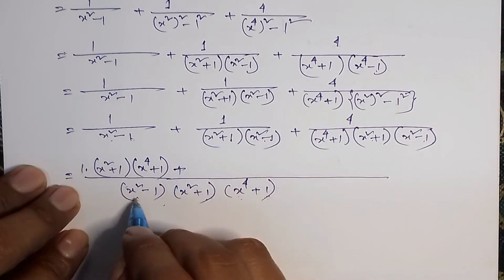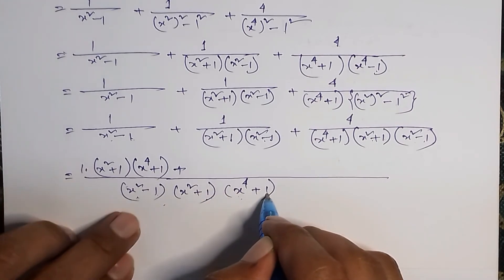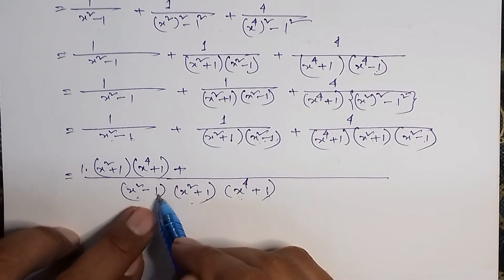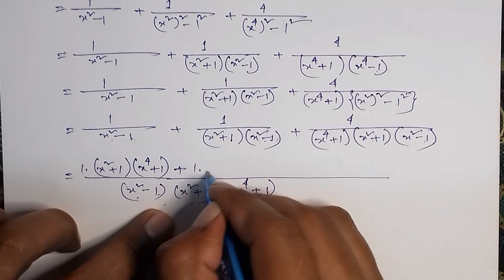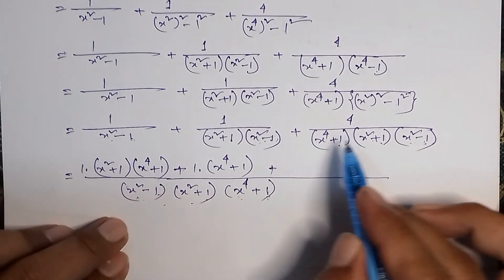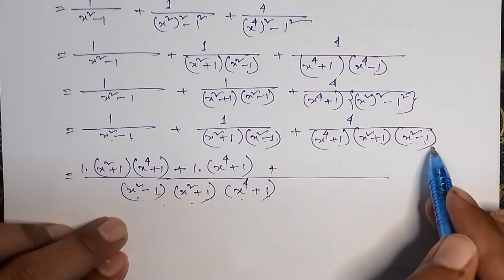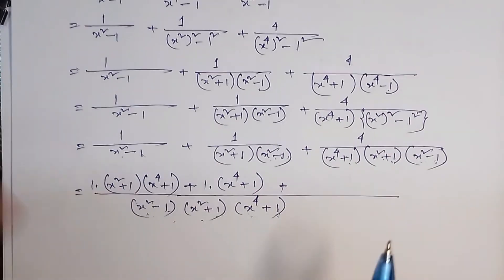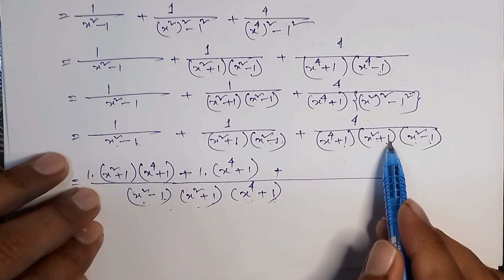So x squared minus 1 into x squared plus 1 into x to the power 4 plus 1 ke bhagkuri. So we will write: x squared plus 1, x squared plus 1, x squared minus 1, x squared minus 1. So 1 into (x to the power 4 plus 1): x squared minus 1 into x squared minus 1 into x to the power 4 plus 1, plus x squared plus 1, x squared plus 1.